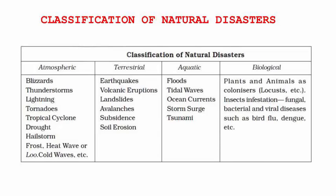The last classification is biological. Any kind of epidemic, flu, or anything of a medical sort that spreads in a place falls under the biological category of disasters. There was a recent outbreak of swine flu — the H1N1 virus — in our country, which falls under biological disaster because it caused a lot of harm and people actually died because of it.